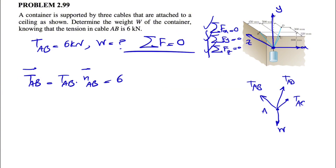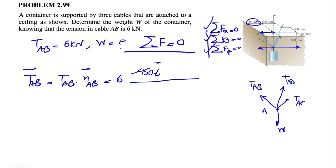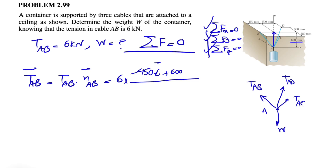Let's start with B. The X component of B is the distance from the origin to B in the X direction, and we are on the negative side, so it will be -450i. The Y component is the distance upward, which is +600j. Since B is in the XY plane, there is no Z component, so Z is zero. The magnitude is the square root of 450 squared plus 600 squared. That's pretty much everything needed for TAB.